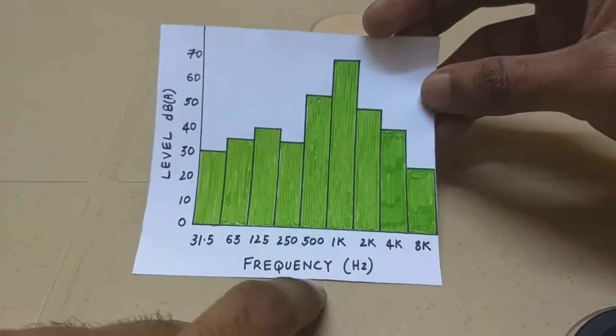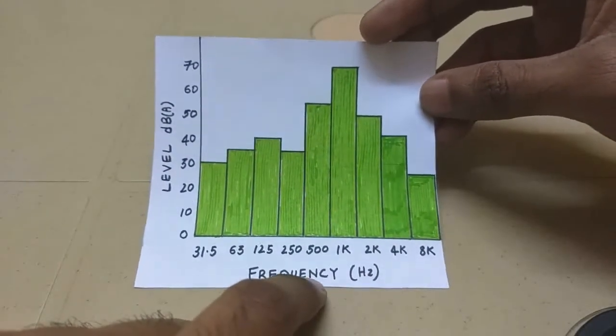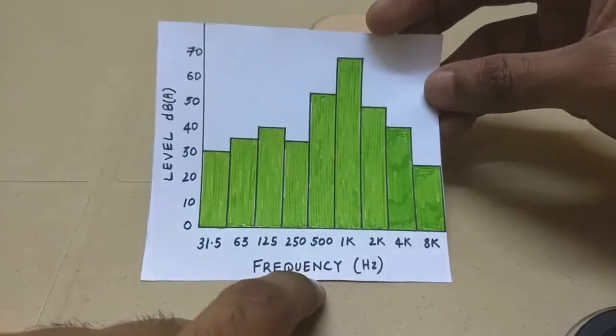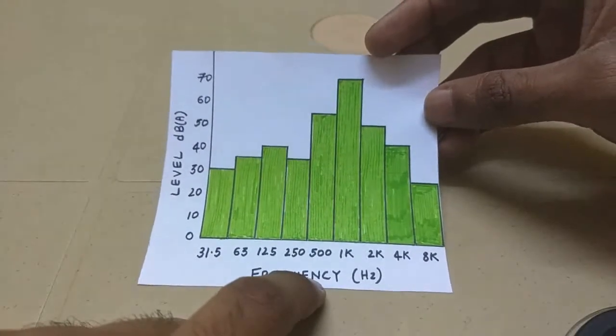But the advantage is it consumes less space because there is less resolution. There are other types of octave bands like 1/12th, 1/6th, 1/3rd, 1/24th, they are like little higher resolution. We will discuss them in future videos.